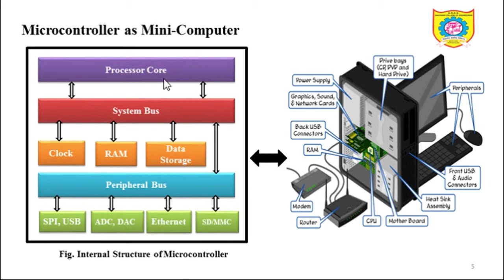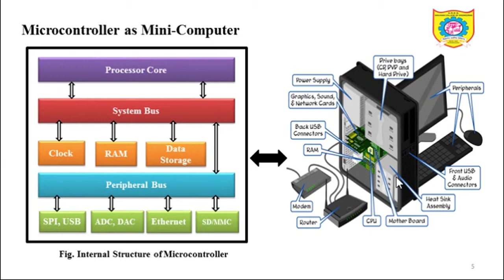Here we have a processor core, also called CPU, and in a computer we also have a CPU mounted on the motherboard. RAM memory is used in both — the internal structure of a microcontroller as well as the CPU of a computer. Then we have data storage: SD and MMC cards used as memory devices, while computers have CDs, DVDs, and hard drives. We also have Ethernet for external communication, and USB ports present in both.